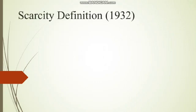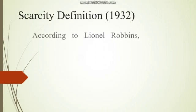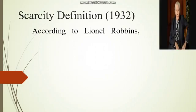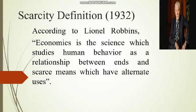In 1932, it is the most popular and well-accepted definition of economics. According to Robbins, economics is the science which studies human behavior as a relationship between ends and scarce means which have alternative uses.